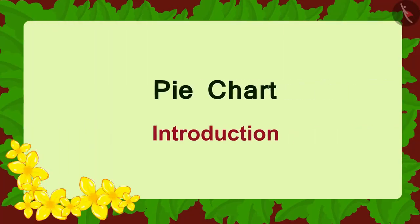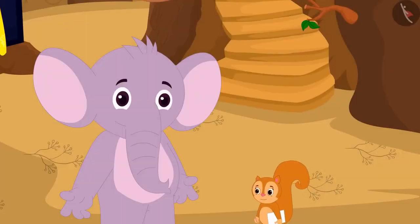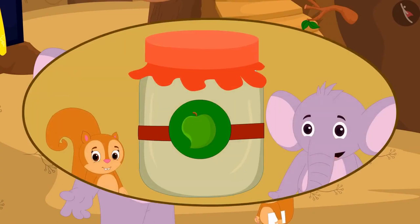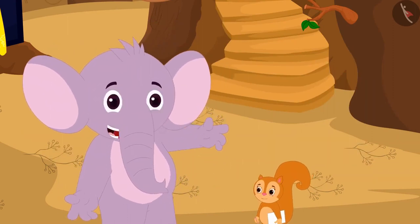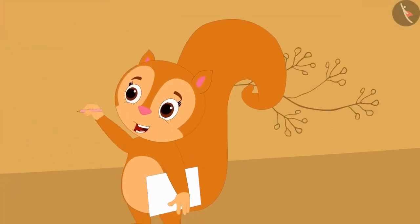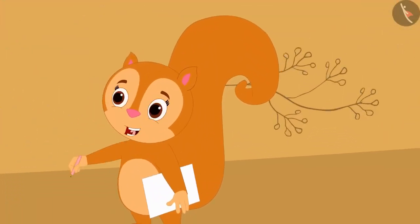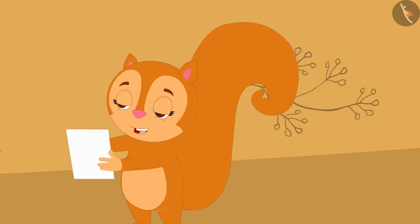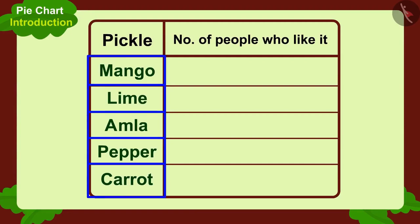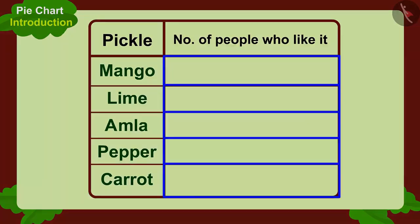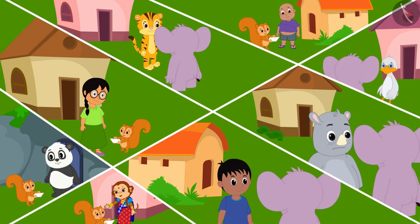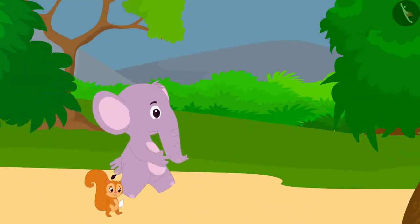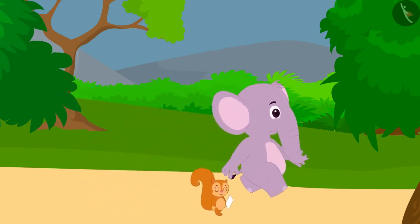Hello Children, in this video we will learn about the pie chart. Chanda and Appu want to start a pickle making business together. Chanda, I think we should first find out which pickles people like. Yes, Appu — let's find out by asking the villagers. I will write down the names of some pickles on a paper, then we will write the number of people who like that pickle in this table. Chanda and Appu go to people's homes to find out which pickle people like. By the end of the day, they completed their table by asking a hundred people their choice.